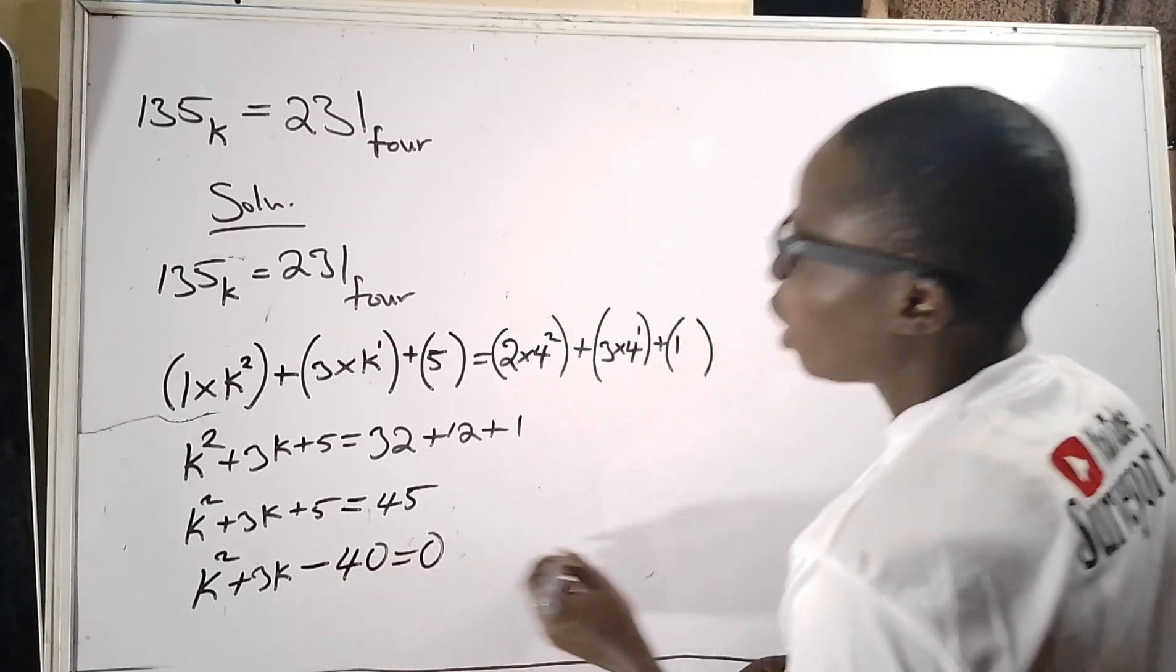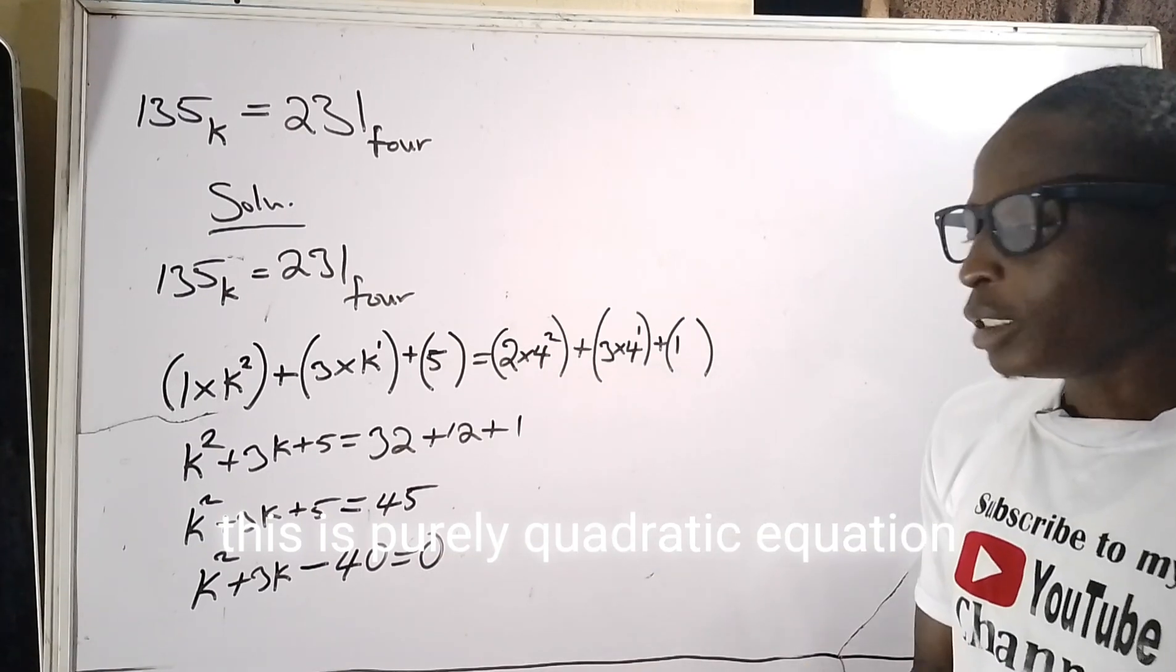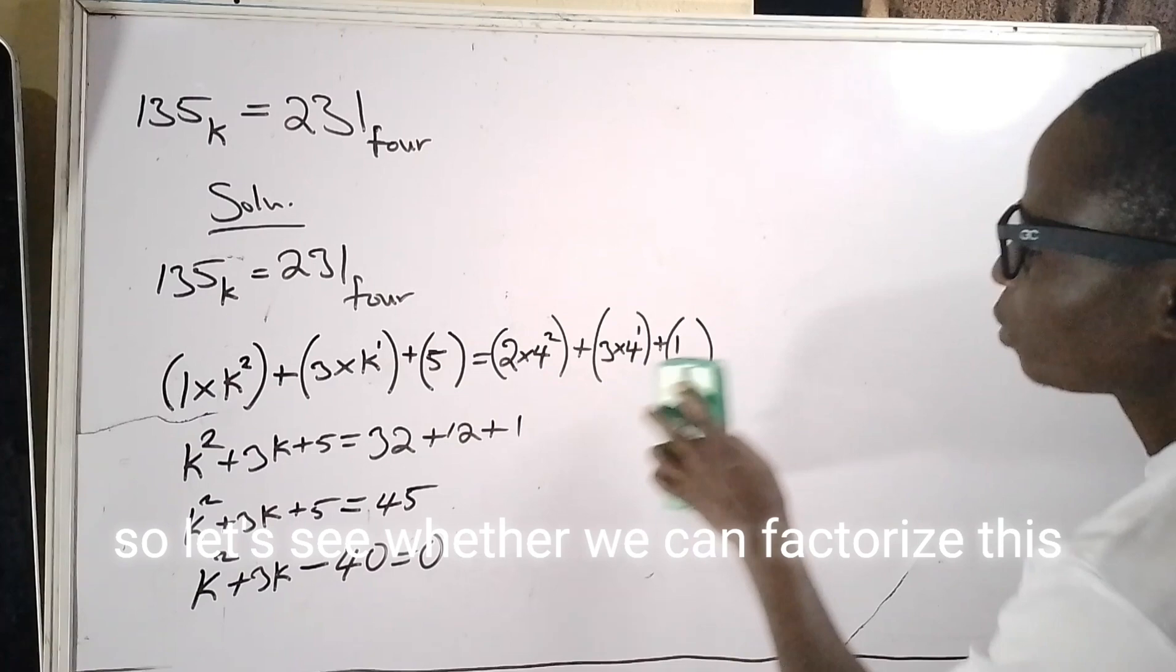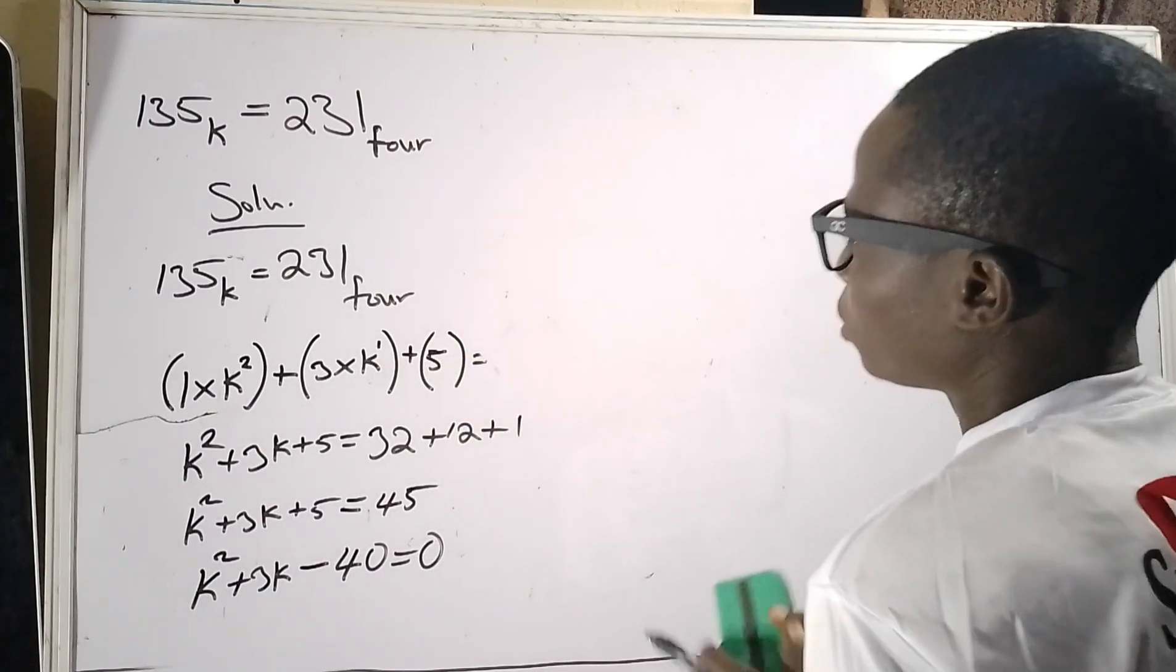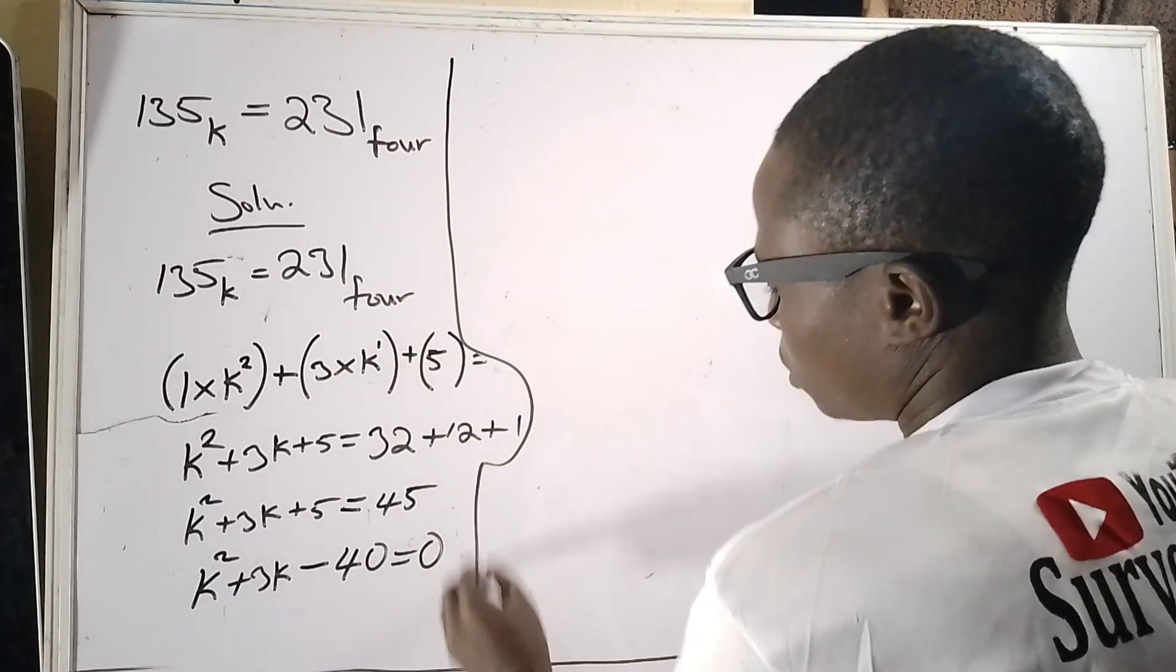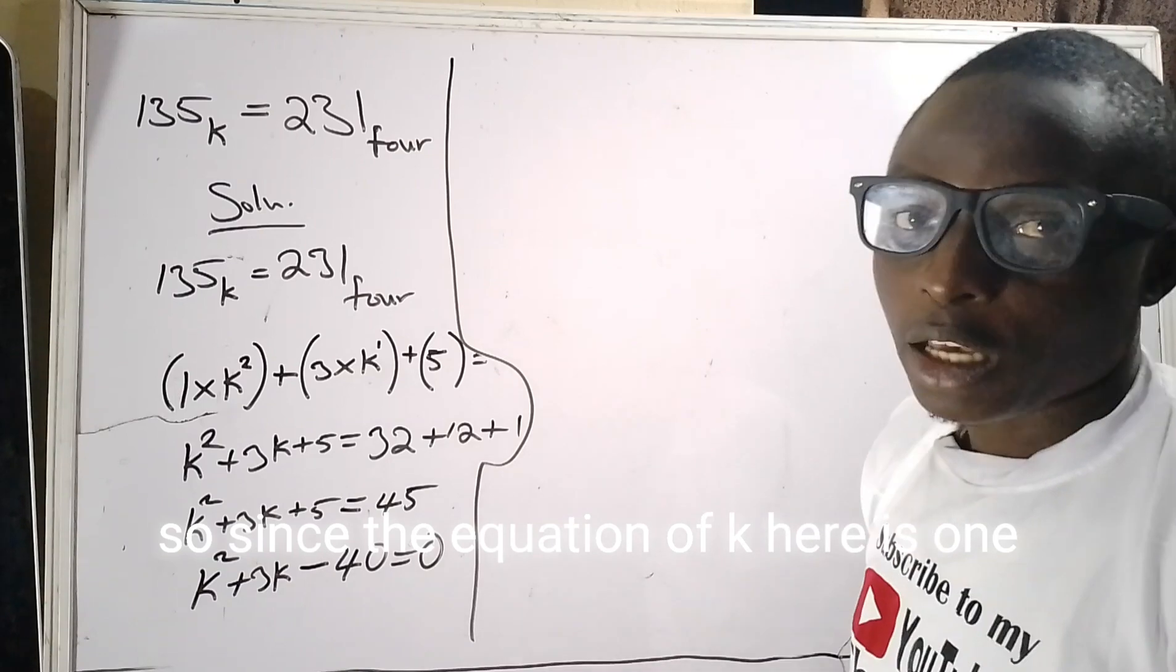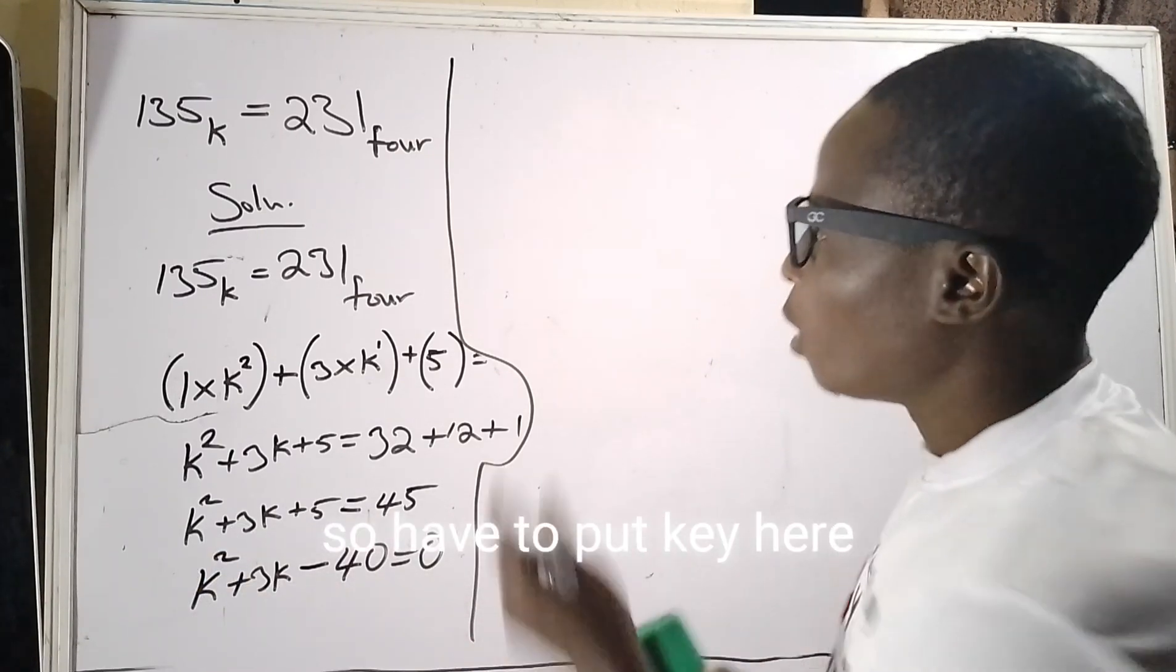So k squared plus 3k, for now, 5 minus 45 is minus 40 equals zero. And you can see that this is purely a quadratic equation. So let's see whether we can factorize this because it will be more easier.